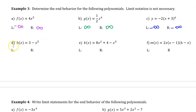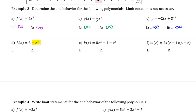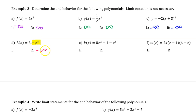Part d is not written in standard form, so be careful. The leading term is always the term with the highest degree — that's the only term you need to look at. The leading coefficient is negative, so the right end behavior will be approaching negative infinity. The degree is odd, so the left end behavior will be the opposite, approaching positive infinity.